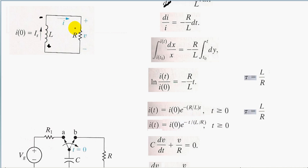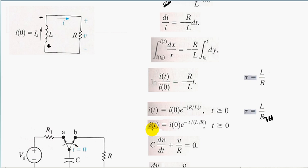In a simple RL circuit, notice that L over R is our time constant, tau. We'll use this especially when we do sequential switching — we'll have to find tau = L/R. In more complex circuits, this R would be our R-Thevenin. So, the current through this resistor over time is its initial current times e to the minus T over L divided by R.